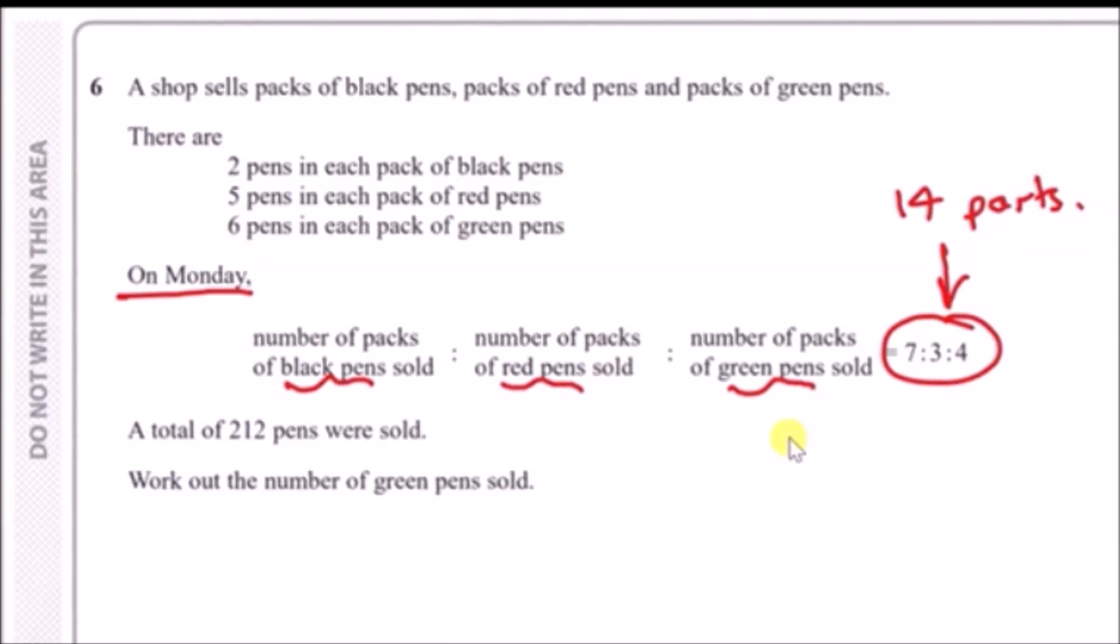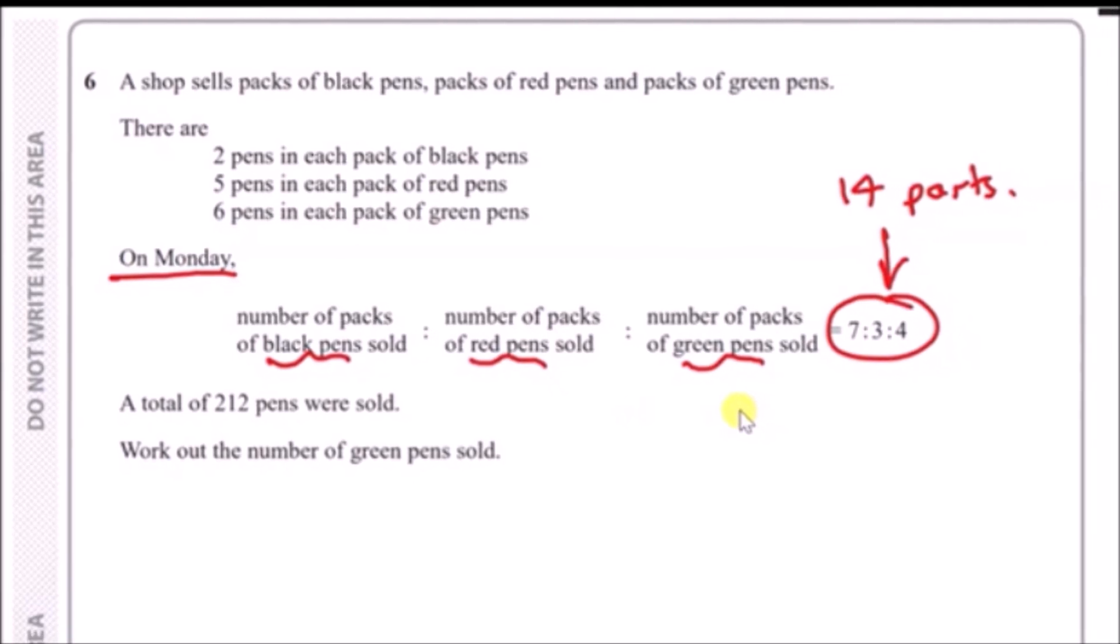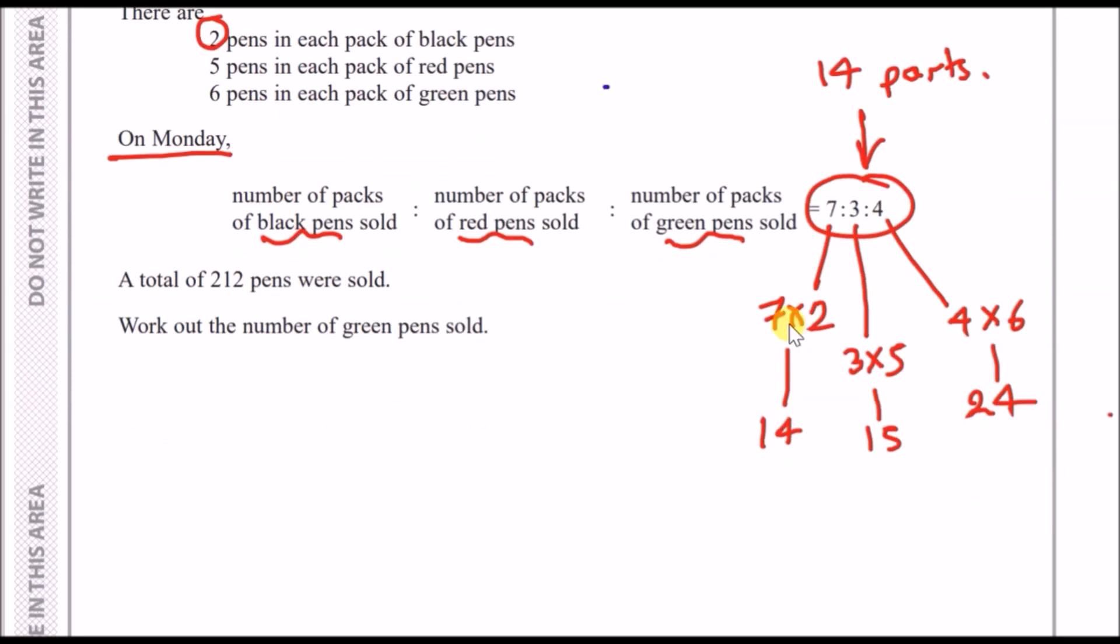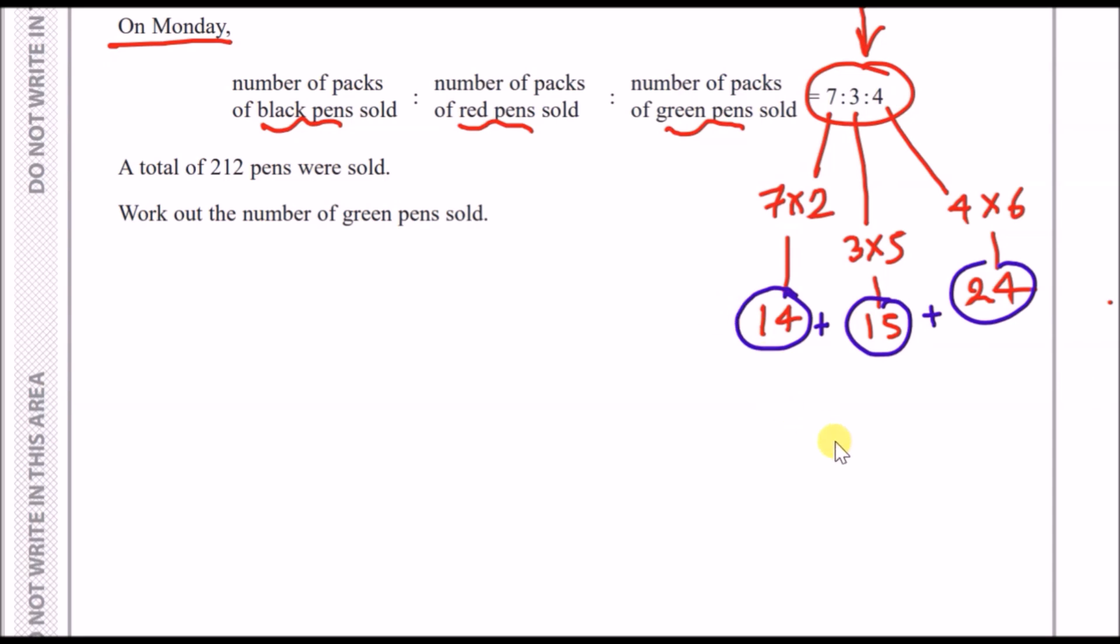It said that 2 pens in each pack of black pens were sold and we know that there were 7 packs sold, so this means 7 × 2. We do the same for the 3 and 4 packs: 3 × 5 and 4 × 6. Doing the math you should get 14 for the first one, 15 for the second one, and 24 for the last one. These are the number of pens that were actually sold as parts.